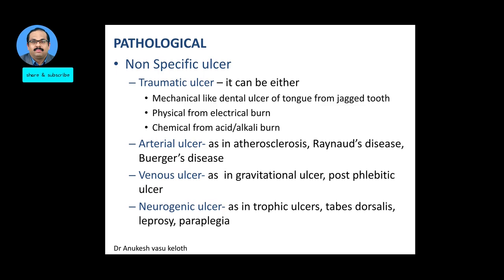Physical trauma may occur following electrical burns; chemical trauma following acid or alkaline burns. Then you have the arterial ulcer, which is an ischemic ulcer seen in patients with diseases like arteriosclerosis, Raynaud's disease, and Buerger's disease. Venous ulcers include gravitational or stasis ulcers and post-phlebitic ulcers. Neurogenic ulcers include trophic ulcers, as seen in tabes dorsalis, leprosy, and paraplegia.